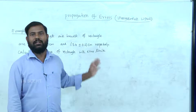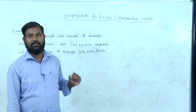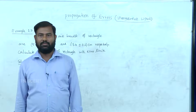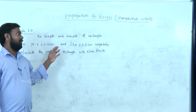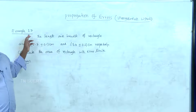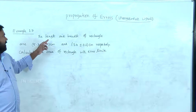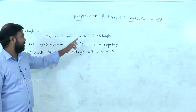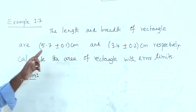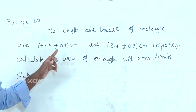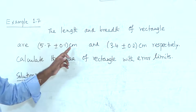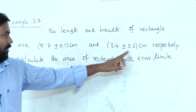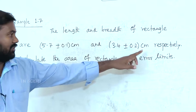We can look at the product of two quantities. Example 1.7: length is 5.7 plus or minus 0.1 cm — this is the absolute error. Breadth is 3.4 plus or minus 0.1 cm.